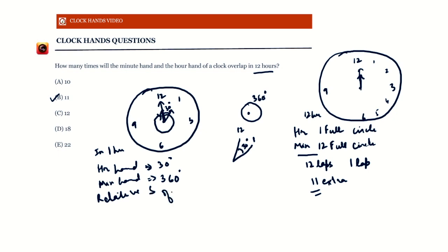Since both hands are traveling in the same direction — both going clockwise — their relative speed is the difference between their speeds. The relative speed of the minute hand with respect to the hour hand is 360 minus 30 degrees, which is 330 degrees per hour.